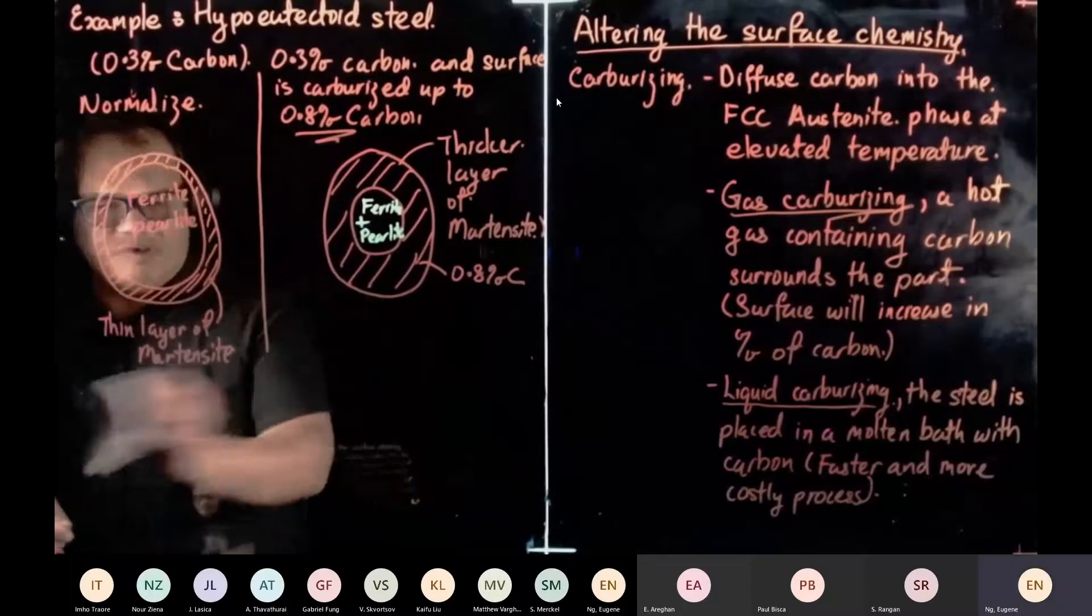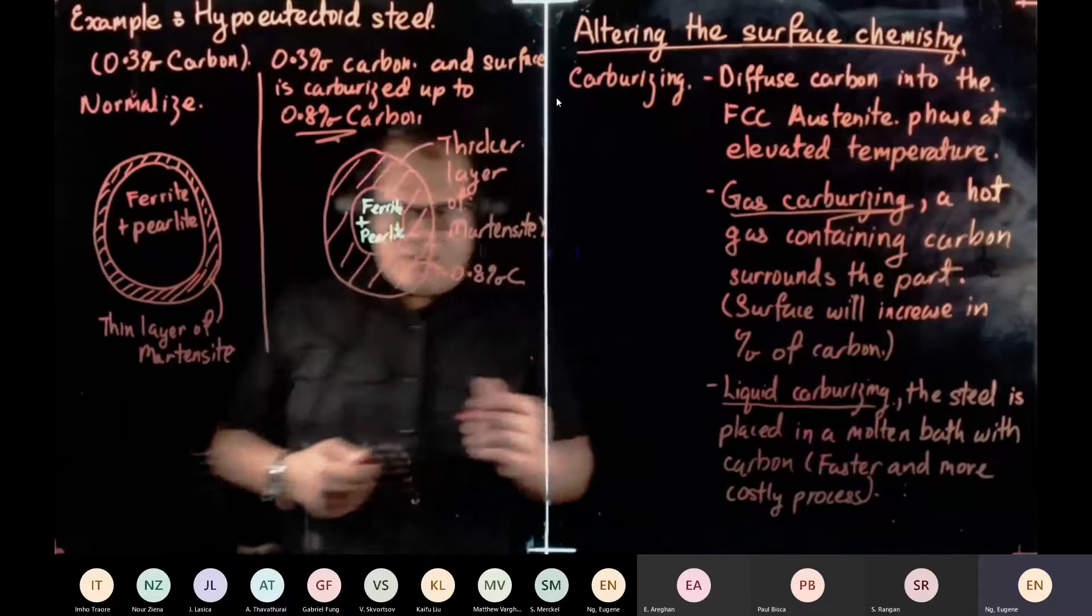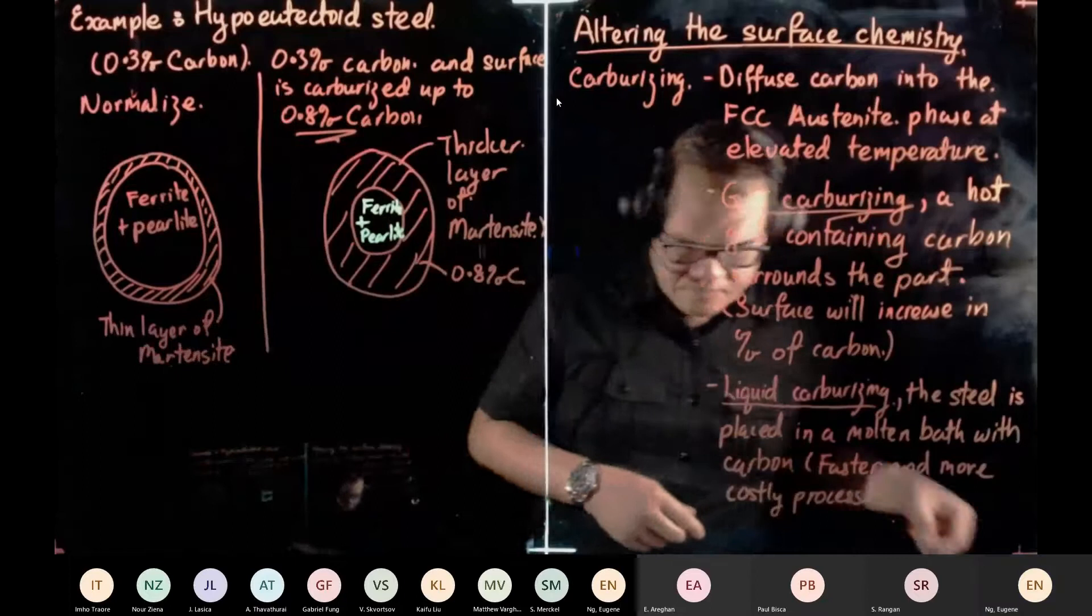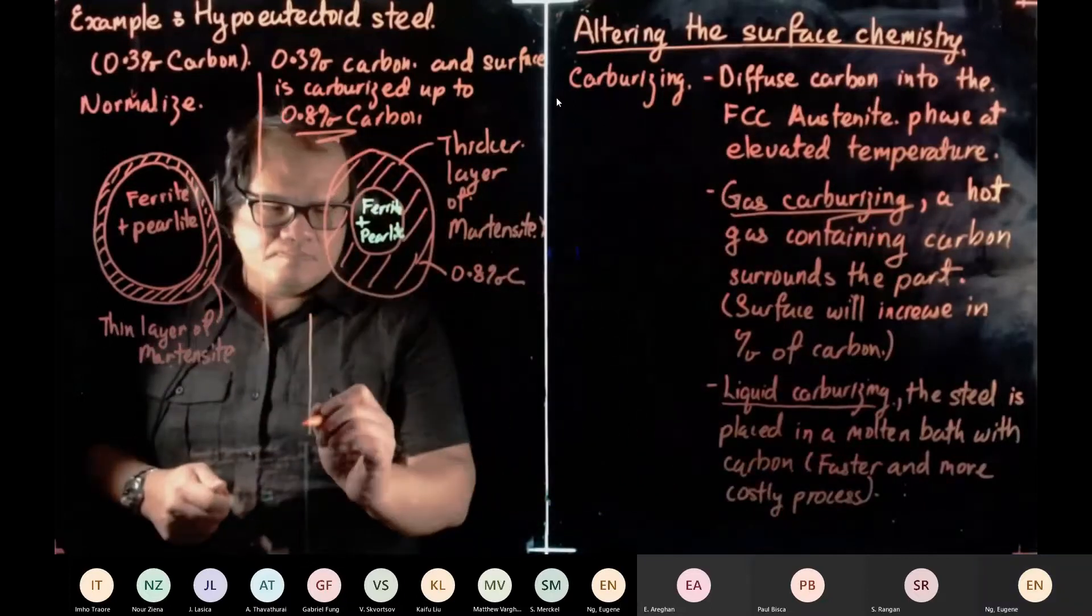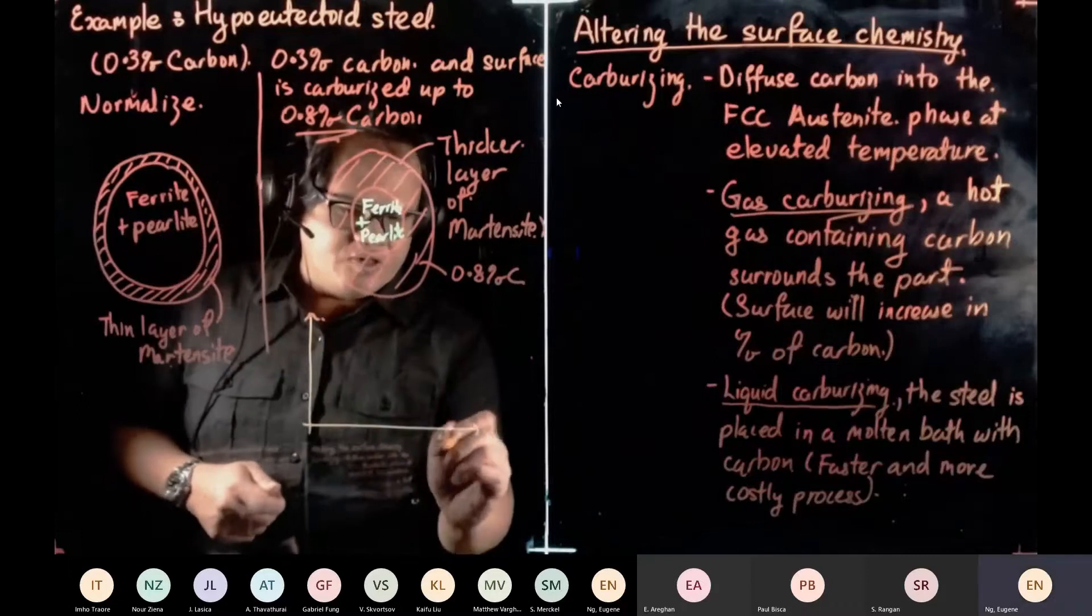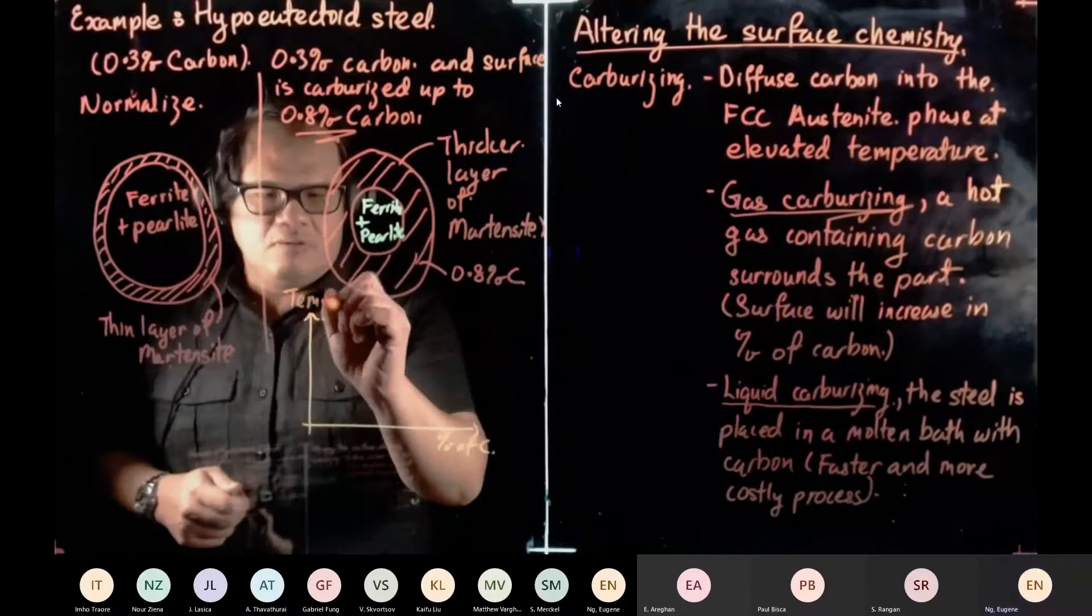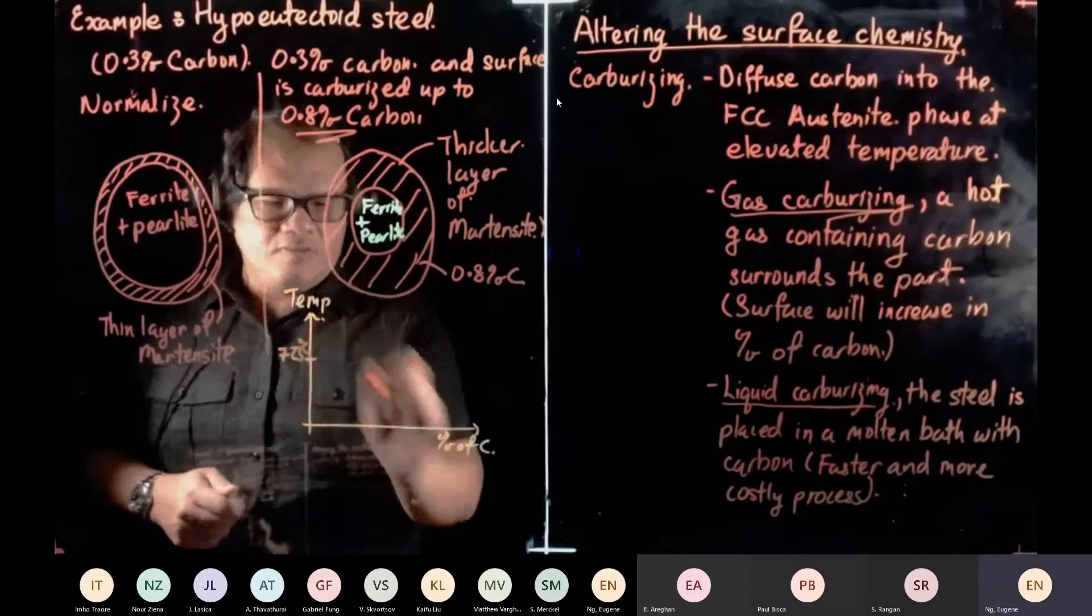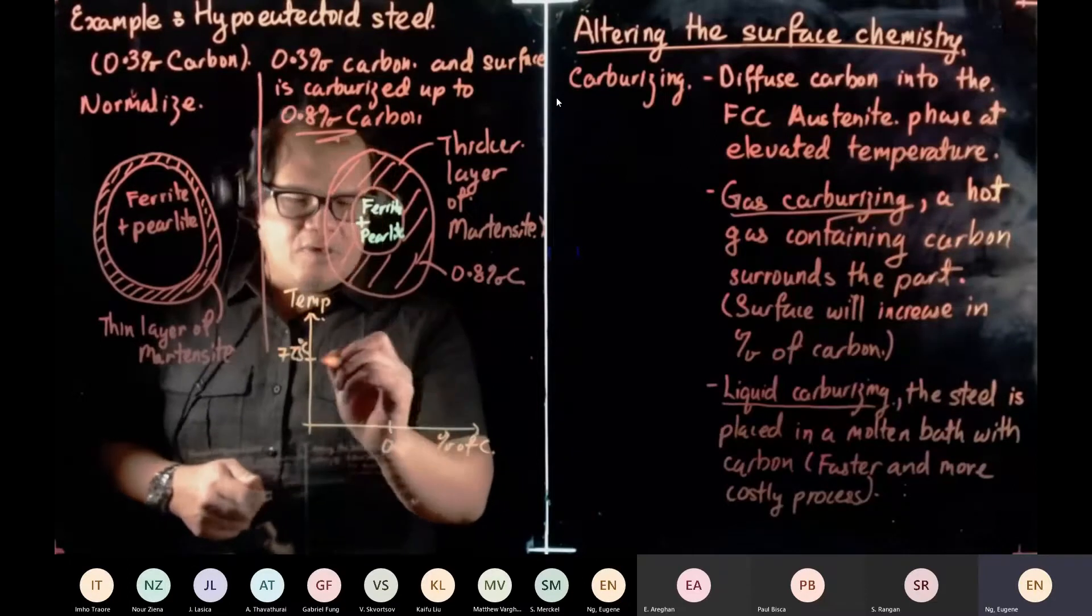What's happening at that temperature? So, the reason why is this. So if we have a diagram now, so this is percentage of carbon, this is temperature, and this is our 723 degree C, and over here, this is our 0.8.